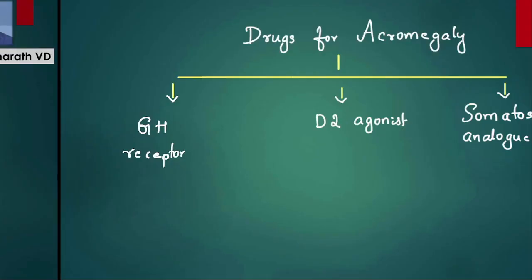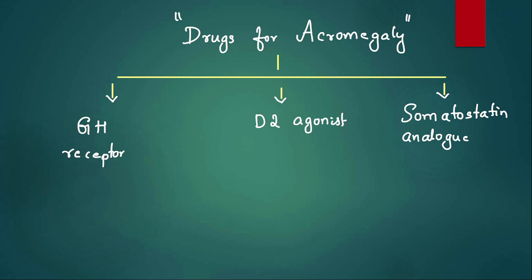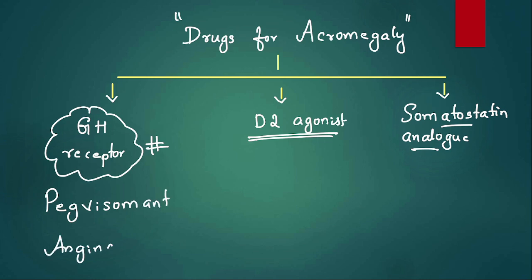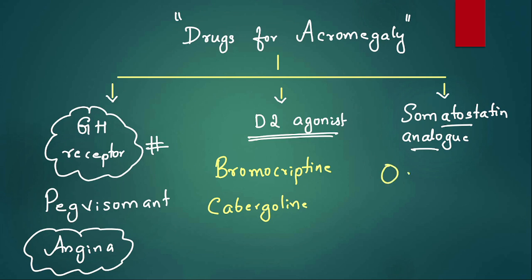What we will understand from this MCQ: drugs for acromegaly are three types. Growth hormone receptor antagonist - pegvisomant. Then dopamine D2 agonist - the drugs are bromocriptine and cabergoline. And somatostatin analogs - octreotide, lanreotide, and pasireotide. These are somatostatin analogs used for acromegaly.